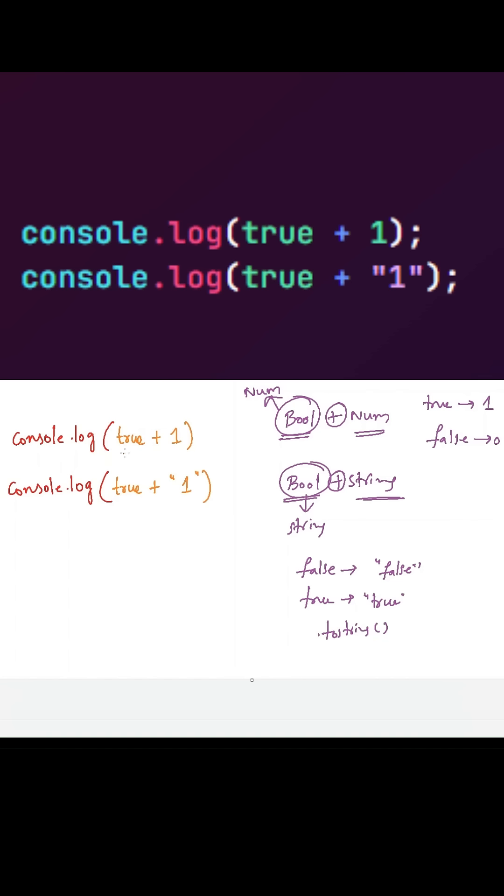the string. If you see the example, addition operator is between boolean and a number, so true will be converted into one. So one plus one will return two in the console. Now here, addition is between boolean value and